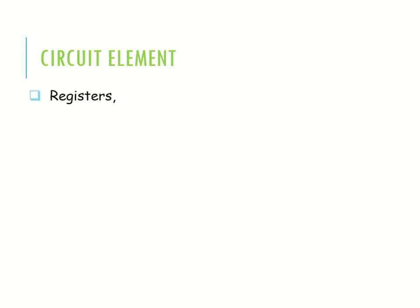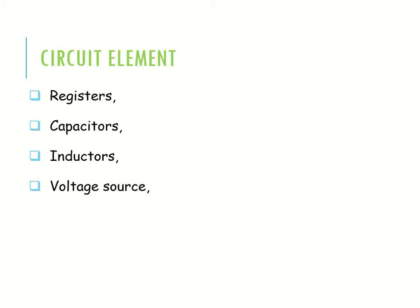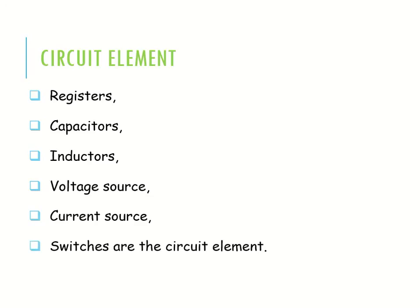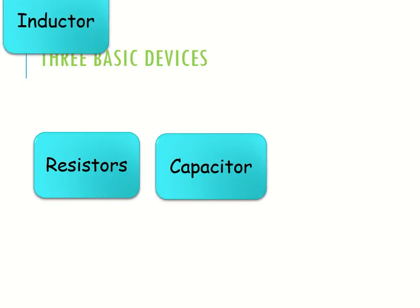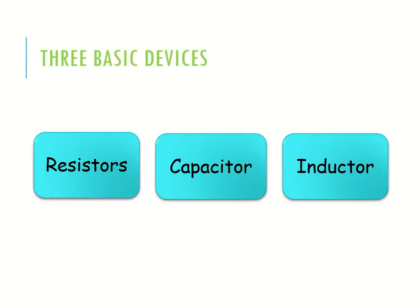There are different circuit elements: resistors, capacitors, inductors, voltage sources, current sources, and switches. Now there are three basic elements — resistor, capacitor, and inductor.